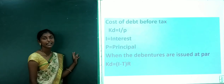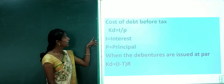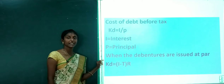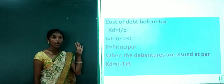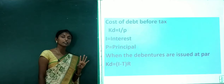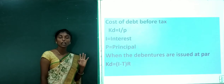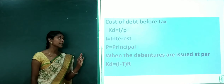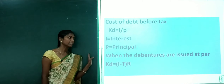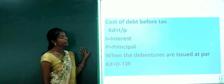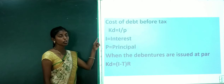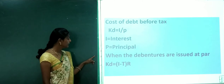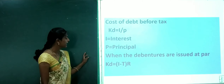The formula for cost of debt before tax is: KD is equal to I divided by P. This is the formula. Cost of debt can be calculated before tax, after tax, at discount, and at premium. The formula is KD equals I divided by P, where I means interest and P means principal.